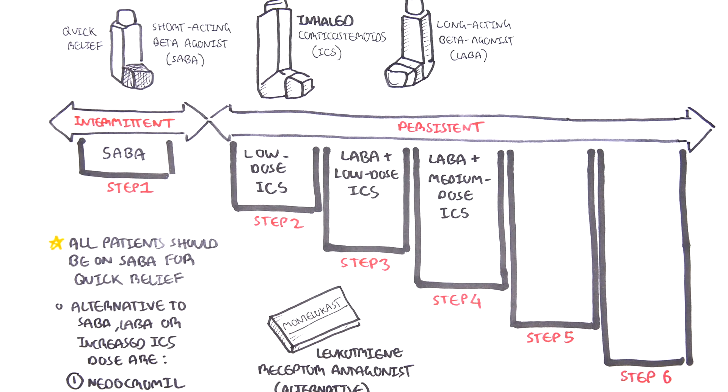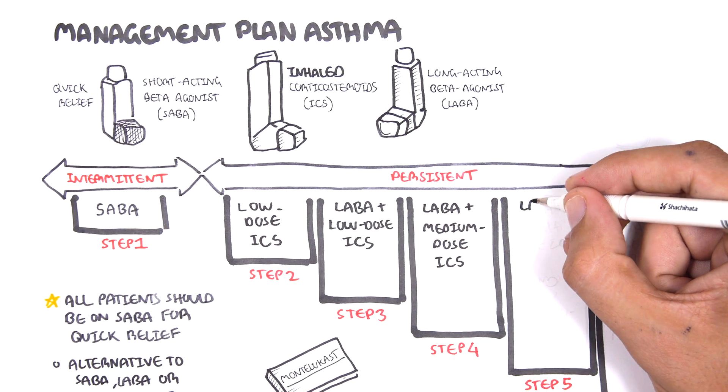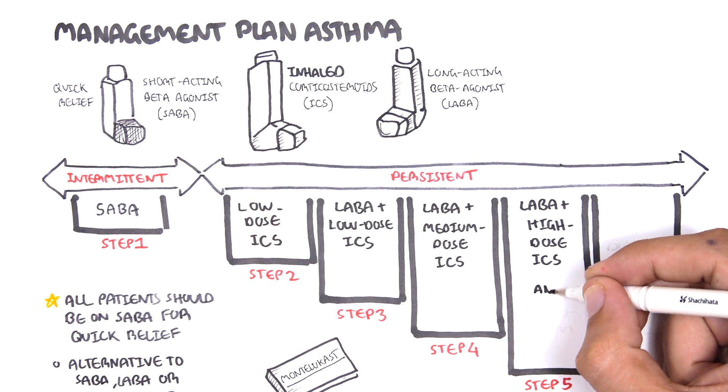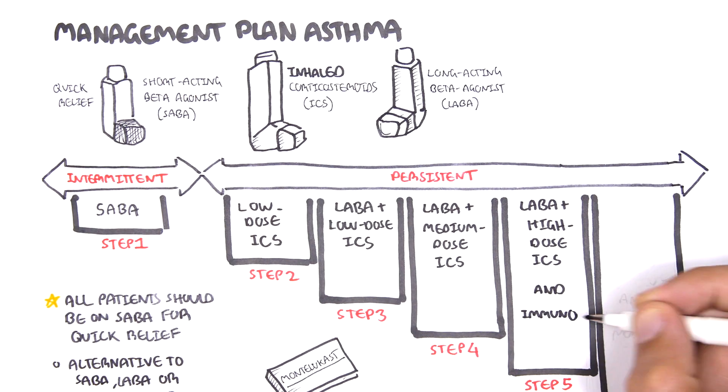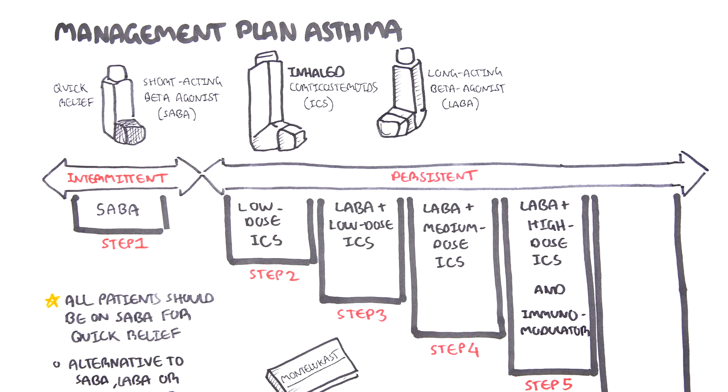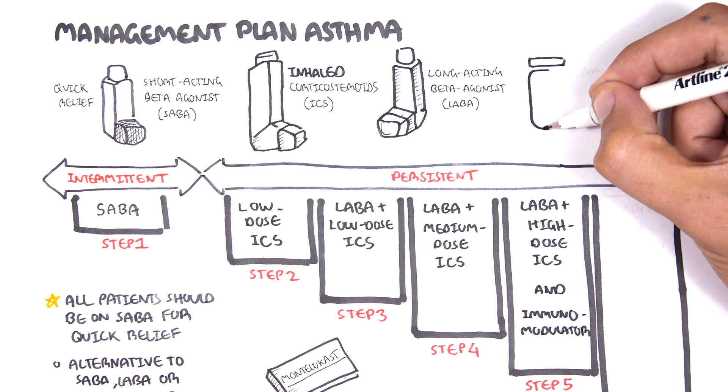For step 5, a long-acting beta agonist can be used together with a high-dose inhaled corticosteroid and short-acting beta agonist. Possibly an immunomodulator can be added to this step to help with allergic symptoms.